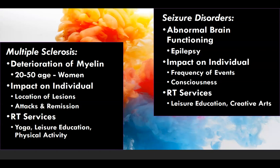Multiple sclerosis, also known as MS, refers to a condition when the myelin surrounding the nerves of the brain, optic nerve, and spinal cord is destroyed, resulting in scar tissue or plaques, also known as lesions, which cause disruption to the transmission of impulses to the brain.